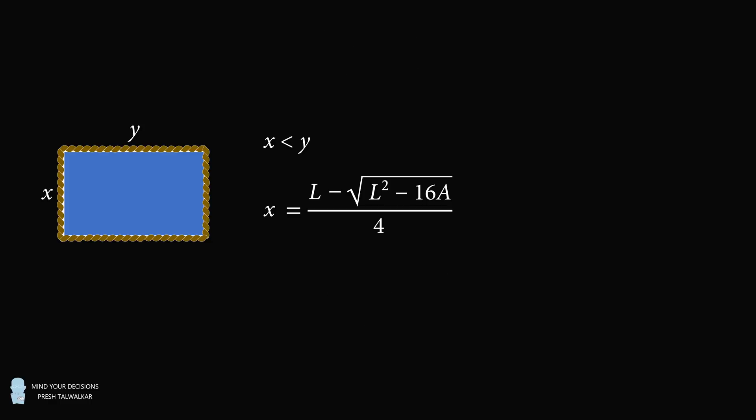Therefore, X is equal to L minus the square root of the quantity L squared minus 16A all over 4. And that's the answer.